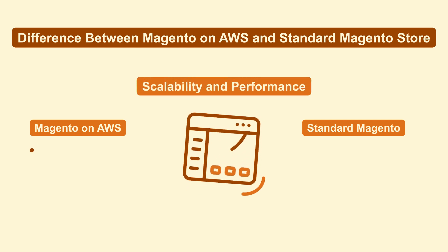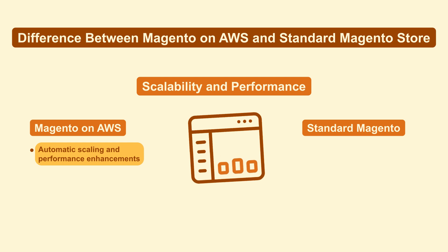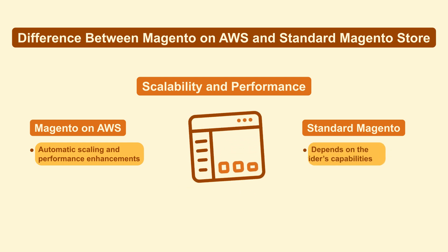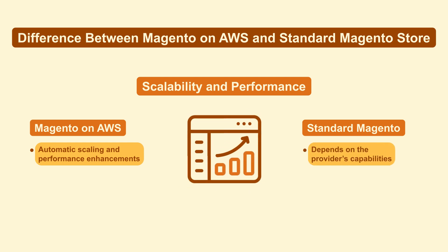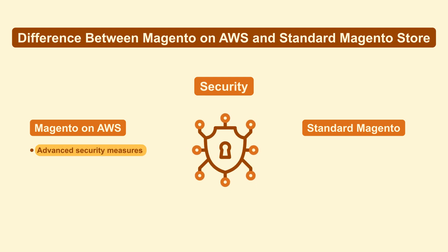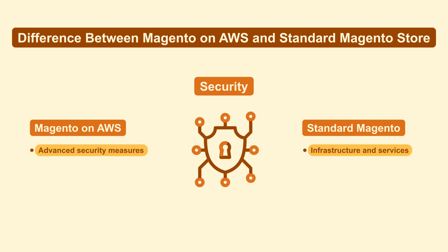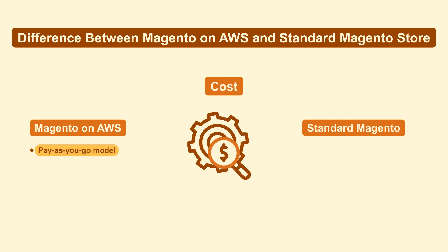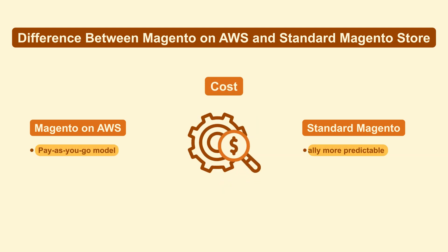AWS provides automatic scaling and performance enhancements, while standard hosting depends on the provider's capabilities. AWS offers advanced security measures, while standard hosting security depends on the infrastructure and services provided. AWS follows a pay-as-you-go model, while standard hosting costs are typically more predictable.